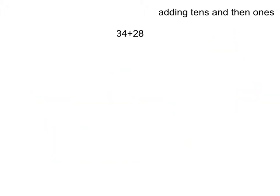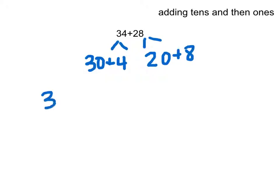Here I'm going to use the strategy of adding the tens and then the ones. 34 can be broken up into 30 plus 4. 28 can be broken up into 20 plus 8. So if I take the 30 plus the 20, I'm going to get 50.